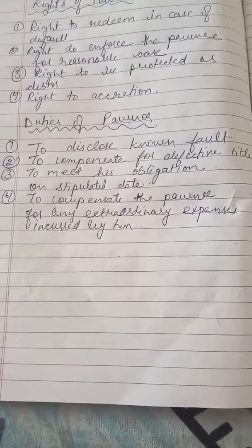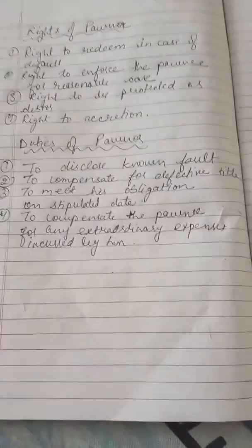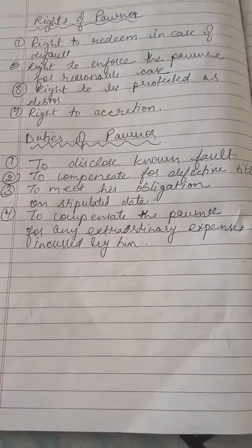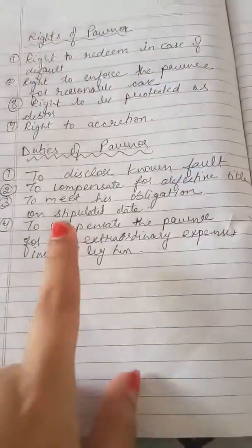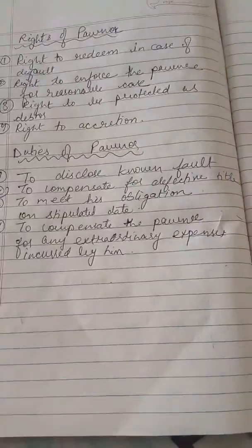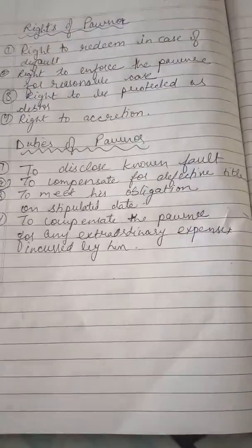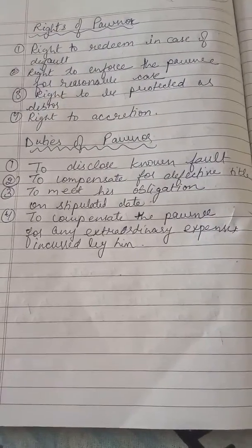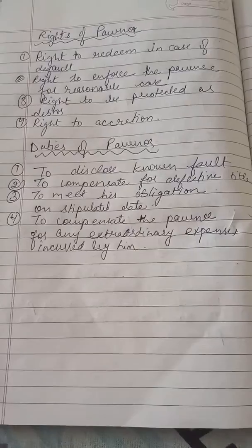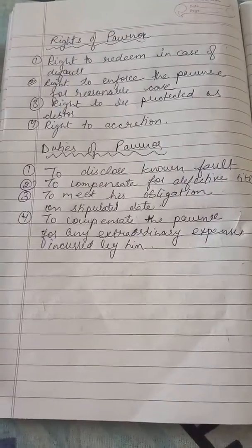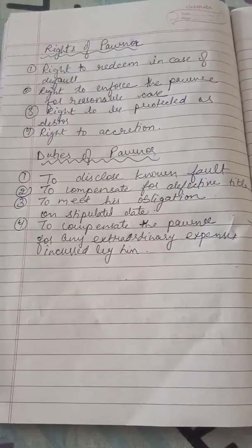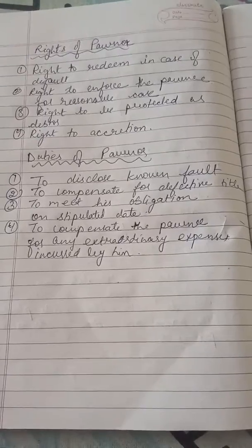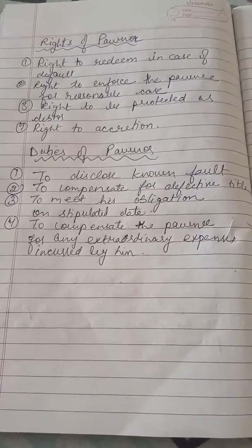Next duty is to meet the obligation on stipulated date - जब हम किसी individual से उधार लेते हैं तो decided date पर उधार वापिस करना पड़ता है, यह pawnor की duty है. Next is to compensate the pawnee for any extraordinary expense incurred by him - अगर pawnee ने goods की देखभाल के लिए कोई extraordinary expense किया है, तो pawnor की duty बनती है कि वो pawnee को वो expense compensate करे. I hope the chapter is entirely clear to everybody.